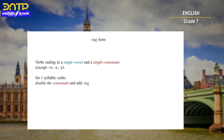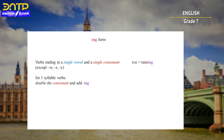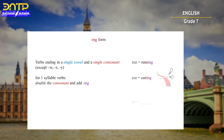Verbs ending in a single vowel and a single consonant — except W, X, and Y — for one-syllable verbs, we need to double the consonant and add ING. For example, 'run' will become 'running' — the single consonant N becomes double. 'Cut' will be 'cutting' and 'sit' will be 'sitting'.